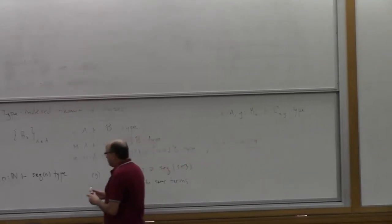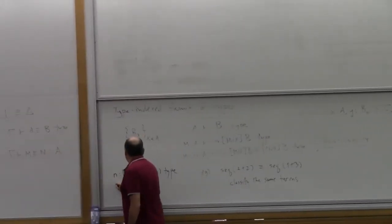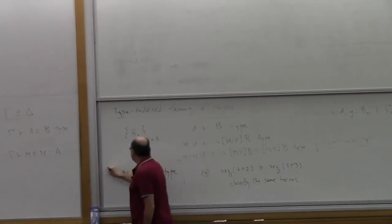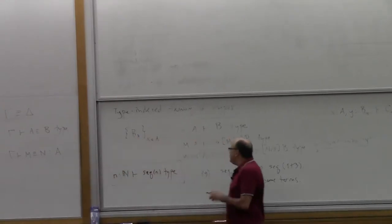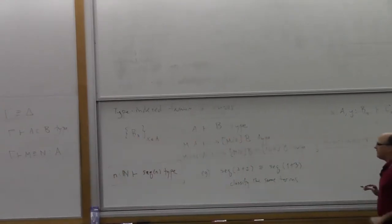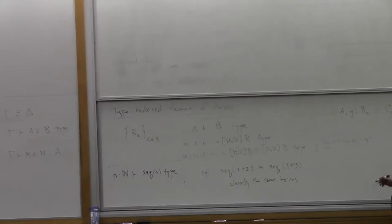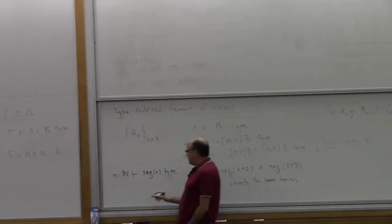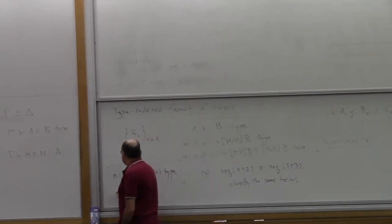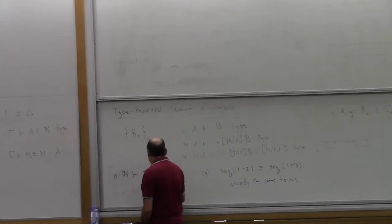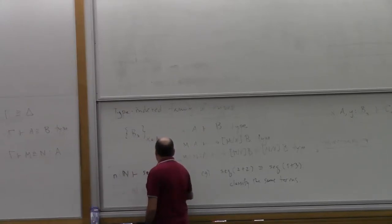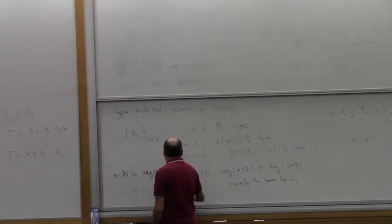The basic thing to keep in mind is the notion of a family of types — like sequences of numbers of a specified length, or things that come up as predicates or relations. For example, writing M and N in the natural numbers, we could have an equality type for M and N, which is a type — the type of proofs that M and N are equal.